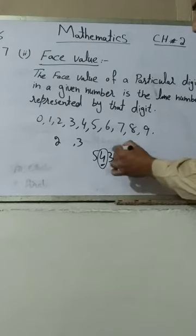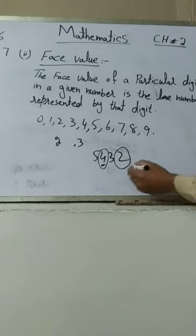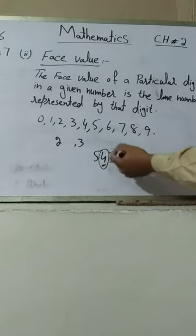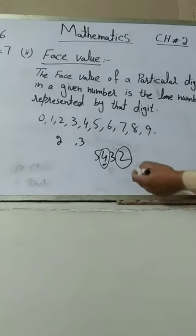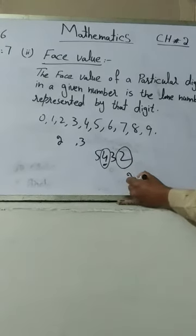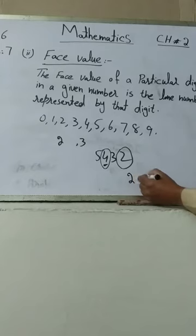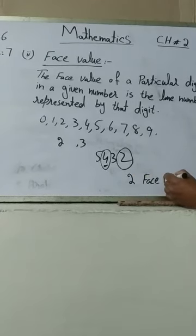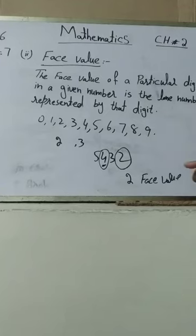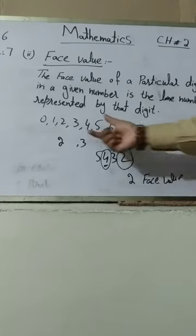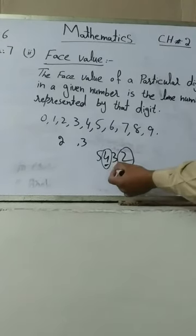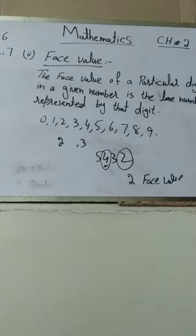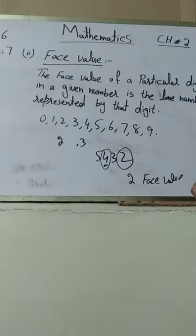For example, in a number, the face value of 2 is always 2, whether it is in the unit place or any other place. Similarly, the face value of 3 is always 3, the face value of 4 is always 4, and the face value of 5 is always 5.